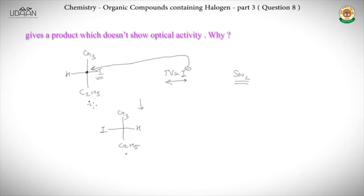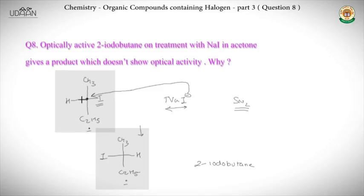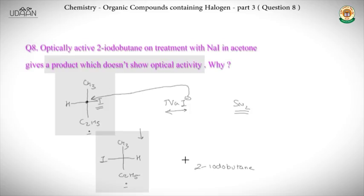The stereochemistry of the starting material and the product are completely different due to this inversion. The final product is actually a racemic mixture of 2-iodobutane — both enantiomers are present. Each individual compound is optically active, but as a racemic mixture the overall product is optically inactive. We must not be misled into thinking each product is optically inactive individually; they are active individually but inactive as a racemic mixture.